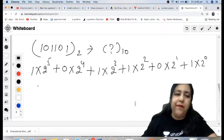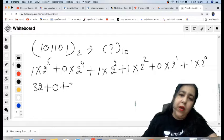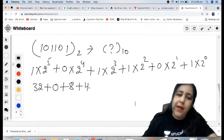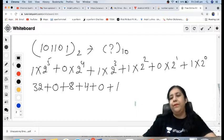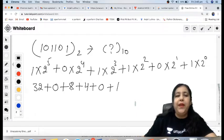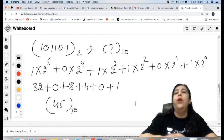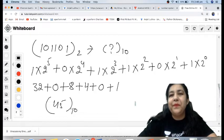So 1 into 2 raised to the power 5, 2 raised to the power 5 is 32, plus 0, plus 8, plus 4, plus 0, plus 1. Right? So 32 plus 8 is 40, 44, 45. That is your decimal number. Understood?